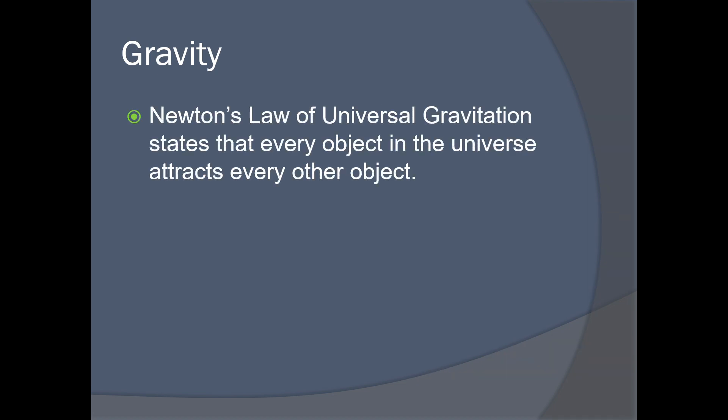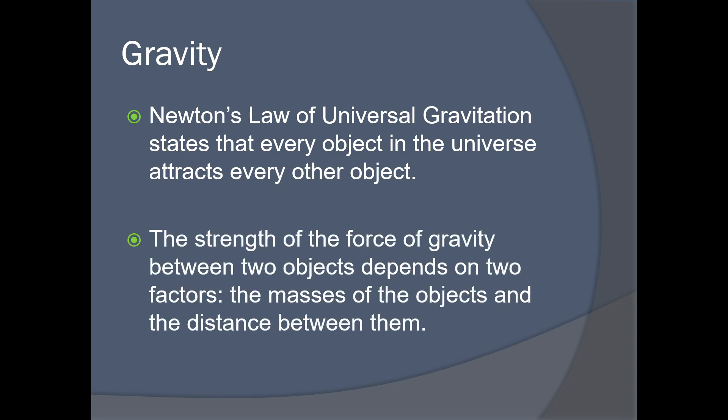This is a vital principle to understand. Newton's law of universal gravitation states that every object in the universe attracts every other object. The strength of the force of gravity between two objects depends on two factors: the masses of the objects and the distance between them. The sun exerts a far stronger gravitational pull on Mercury versus Neptune because Mercury is much closer to the sun.